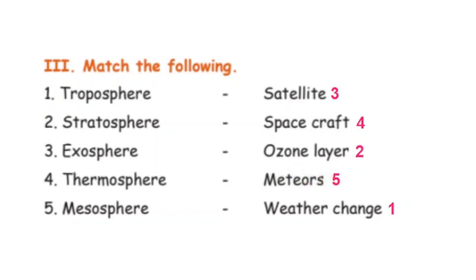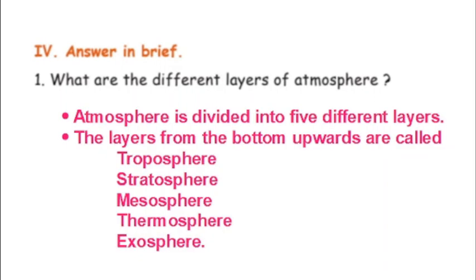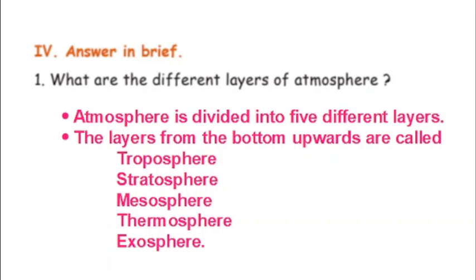In brief: what are the different layers of the atmosphere? The atmosphere is divided into five different layers. The layers from the bottom upwards are: troposphere, stratosphere, mesosphere, thermosphere, and exosphere.